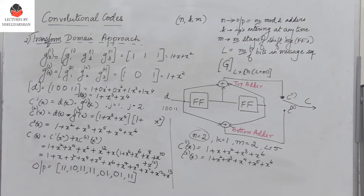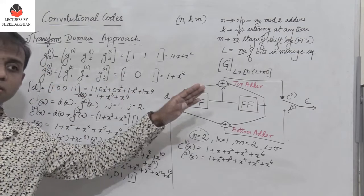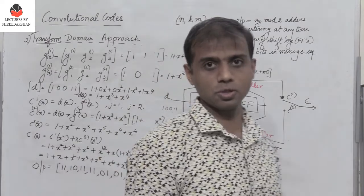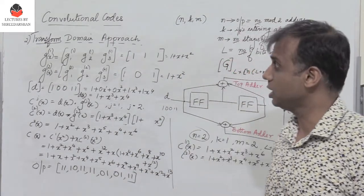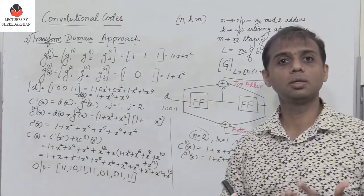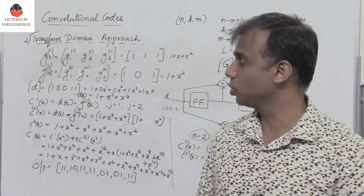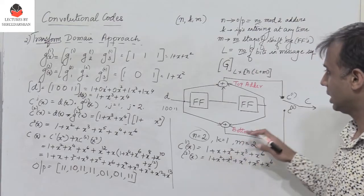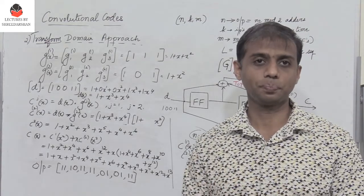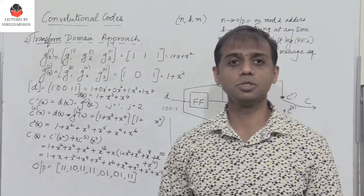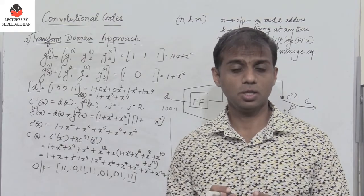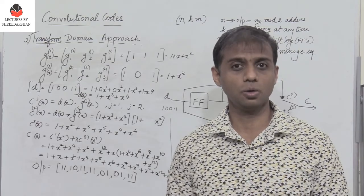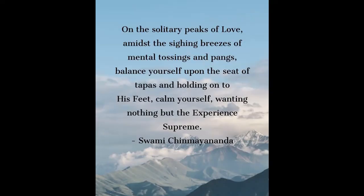So this is the output we got, which matches the time domain approach from the previous video lecture. In these two video segments we covered what convolutional codes are and how to generate a convolutional code using a convolutional encoder using two approaches: time domain and transform domain. In the next video segment we will take another example of a convolutional encoder and solve it using both approaches. Don't forget to like, share, and subscribe, and click the i icon or go through the Information Theory and Coding playlist. Thanks for watching.